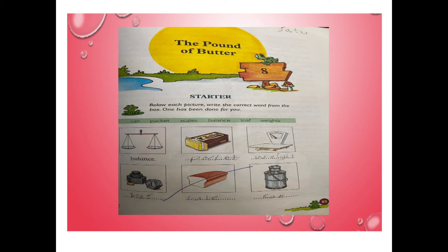Here we are on page eighty-five and there are six things over there in blocks. In the first block, a cheese — usually green grocers use this. This is called a balance. In the second picture you people can see — there are a lot of things: a bank, a can, a packet, scales, a balance, a loaf, and weights.